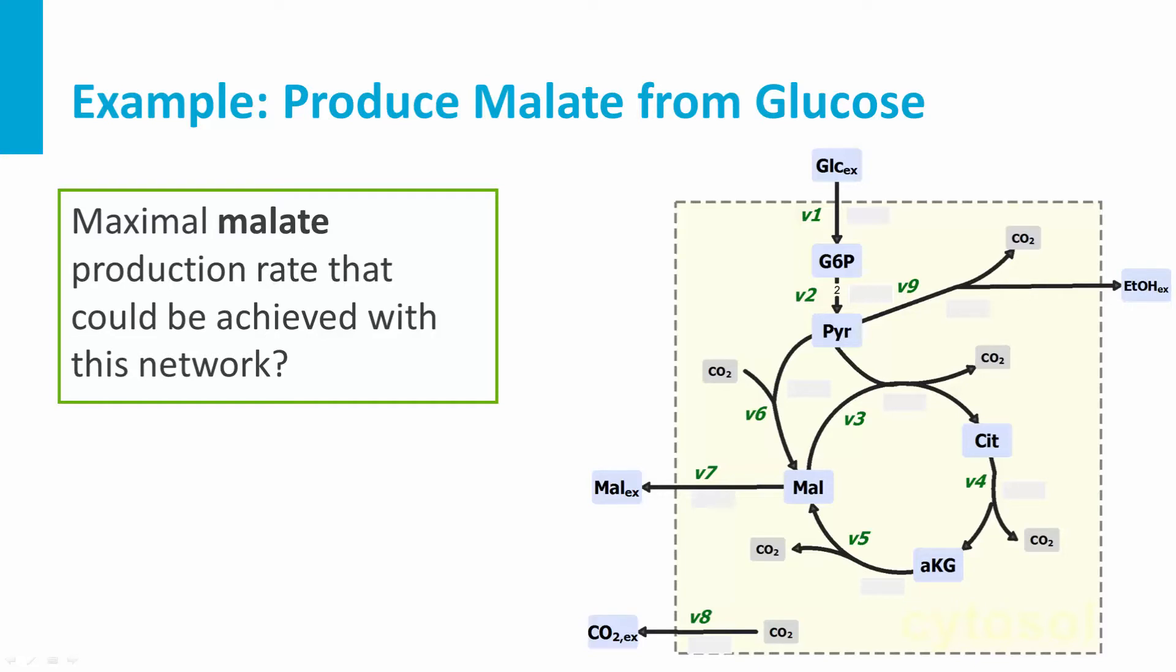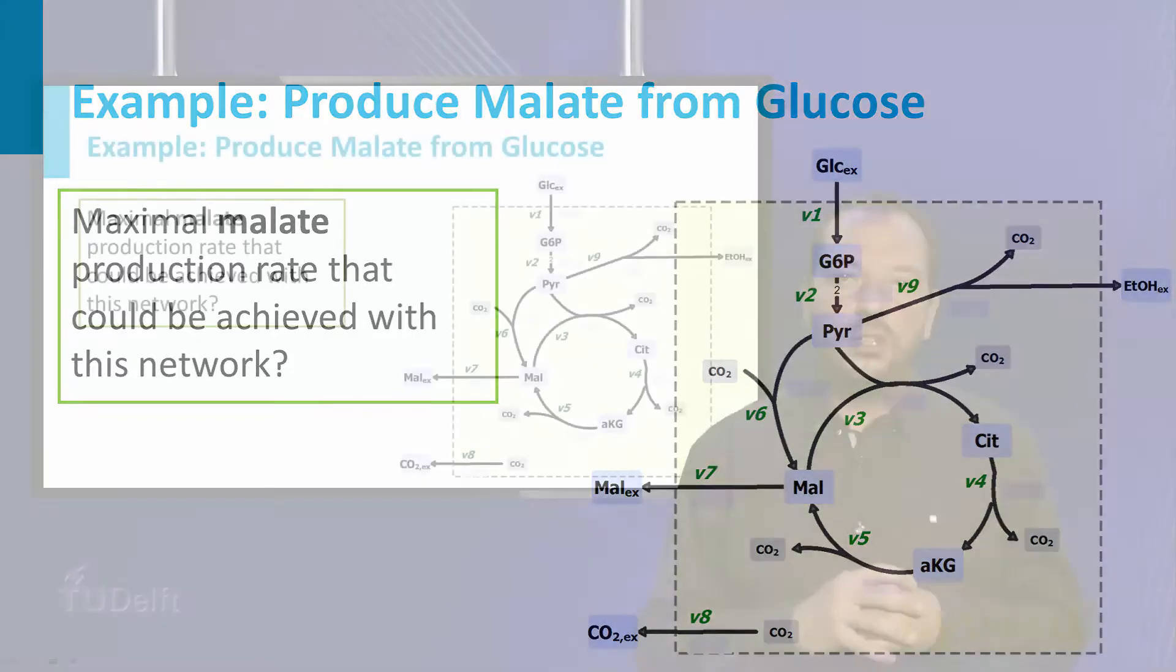The further steps of glycolysis are lumped into one reaction V2, producing two pyruvate from one glucose-6-phosphate. Pyruvate is a central branch point in the network. On the one hand, pyruvate can enter the sequence of reactions representing the TCA cycle. Pyruvate can take the reaction V6, representing an anaplerotic reaction to fill the TCA cycle, or it can be converted to ethanol and CO2.